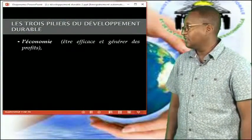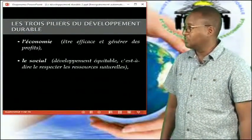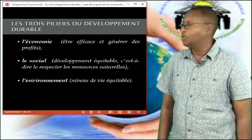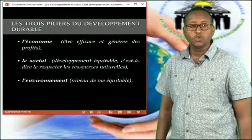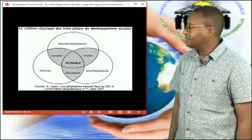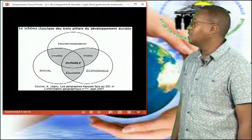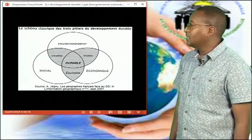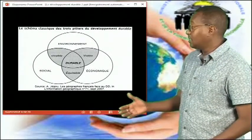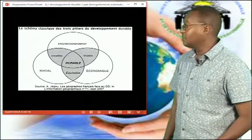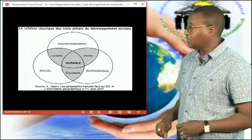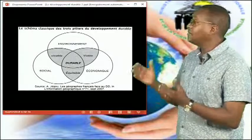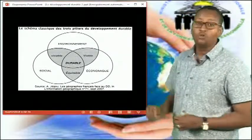Nous allons passer maintenant aux trois piliers du développement durable, qui sont l'économie, le social et l'environnement. Nous allons voir un tableau qui résume la connexion qui existe entre ces trois piliers du développement durable. Un environnement social doit être viable socialement, équitable dans le domaine de l'économie et de l'environnement.